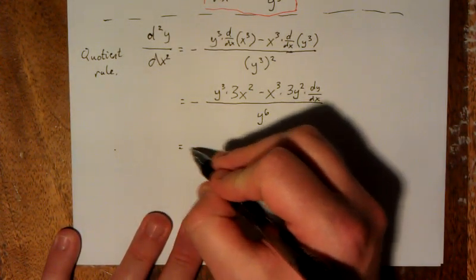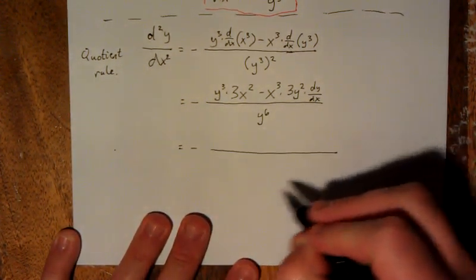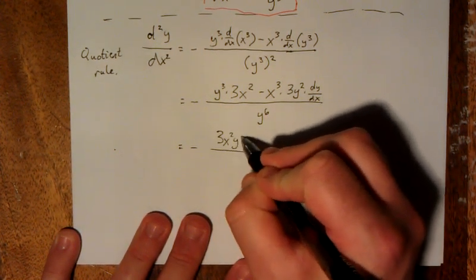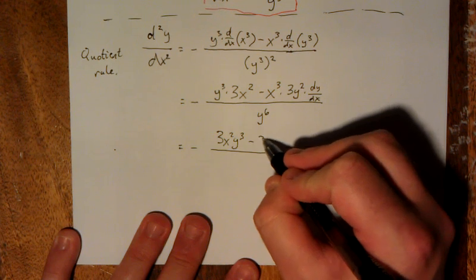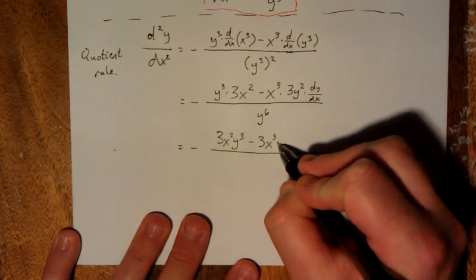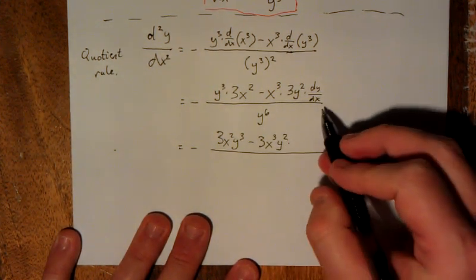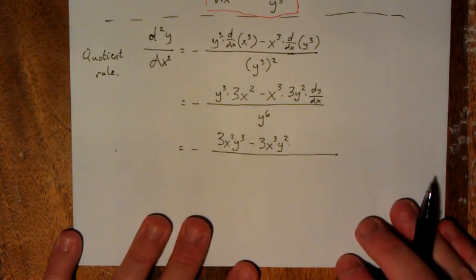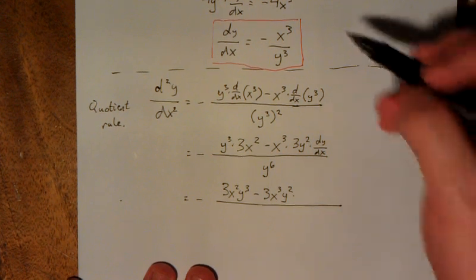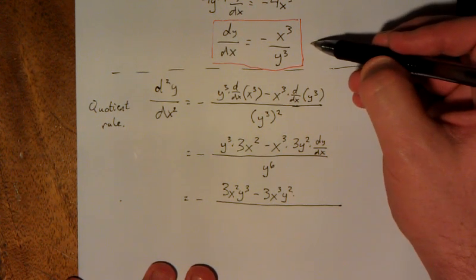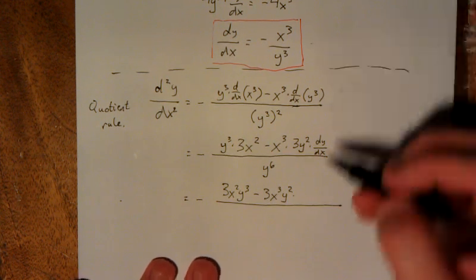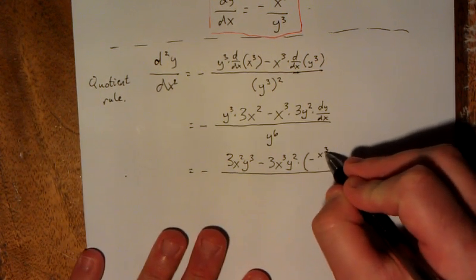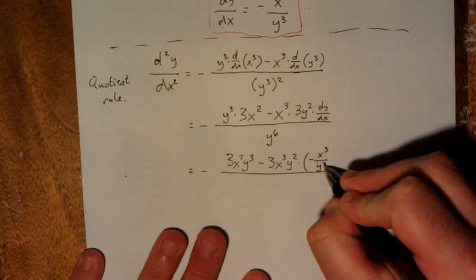I'm going to try to pretty this up a little bit. This will be 3x squared y cubed minus 3x cubed y squared times dy/dx. Now rather than calling it dy/dx though, I'm going to reference back up here to the expression that we had up here for what dy/dx is equal to. I'm going to plug that in for my dy/dx. That is negative x cubed over y cubed.